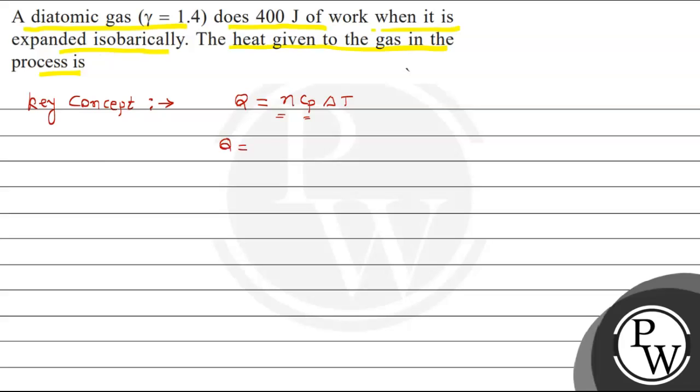Q equals N, Cp value is gamma, this is gamma divided by gamma minus 1, R into delta T.